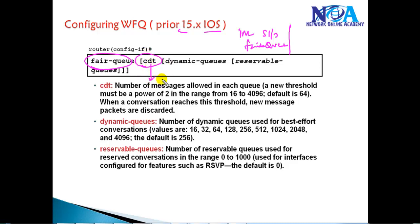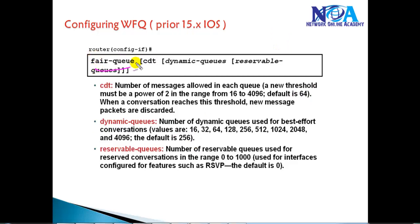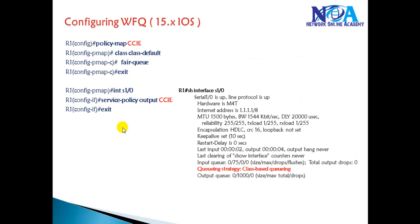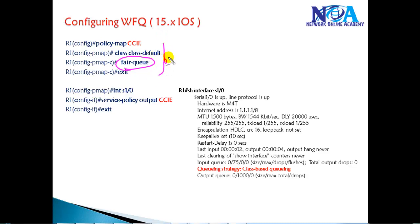Additional optional parameters include the congestion discard threshold, which defines the maximum number of packets — default is 64 — and the number of dynamic queues, which defaults to 256 flows. For newer IOS versions (15+), the fair-queue command is no longer applied directly on the interface; instead, it must be defined under a policy map, which is then applied to the interface. You can verify using 'show interface s1/0', where the queuing mechanism will show as class-based queuing.